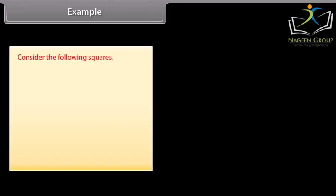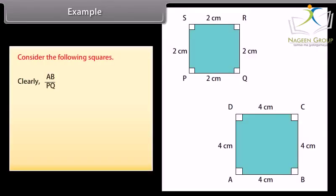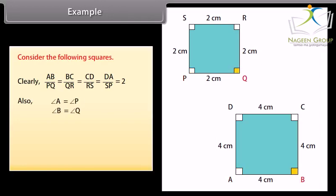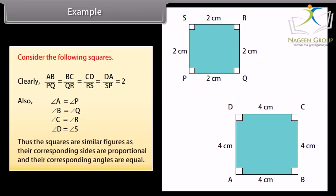Example: Consider the following squares. Angle A equals Angle A, Angle B equals Angle B, Angle C equals Angle C, Angle D equals Angle S. Thus, the squares are similar figures as their corresponding sides are proportional and their corresponding angles are equal.